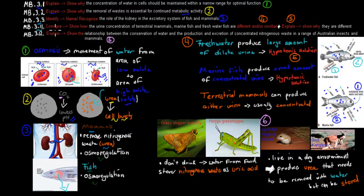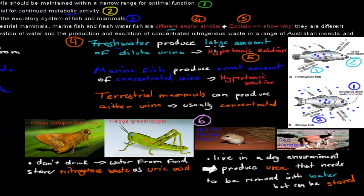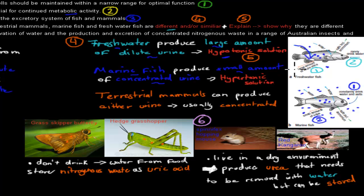Next is 3.11, which says 'compare' — show how urine concentration of terrestrial mammals, marine fish, and freshwater fish are different or similar — and also 'explain' why these levels differ. The freshwater fish produces large amounts of dilute urine, whereas a marine fish produces small amounts of concentrated urine. The reason freshwater fish produce dilute urine is because they live in a hypotonic solution — more solute inside than outside — so water travels into the fish. To prevent bursting, it produces dilute urine to expel extra water, and it rarely drinks.